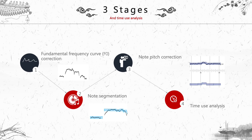The first stage is F0 correction. We get the F0 from Tony software and have to do some corrections. The second stage is note segmentation, where we segment the pitch tracks into notes. The third stage is note pitch correction, where we adjust the pitch of each note. Finally, I will give a brief time-use analysis.